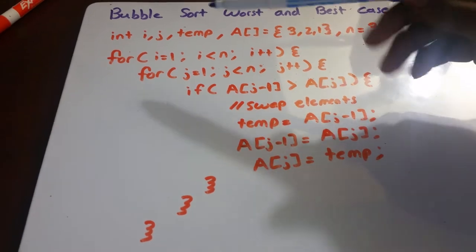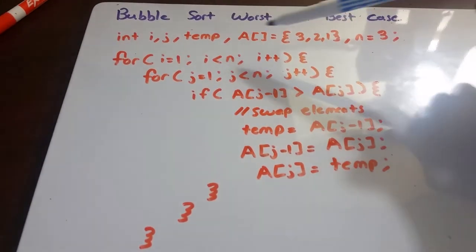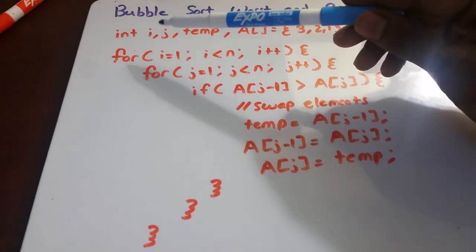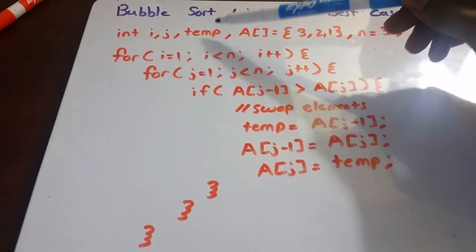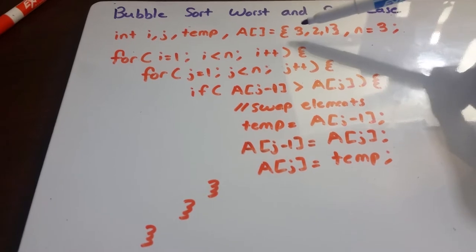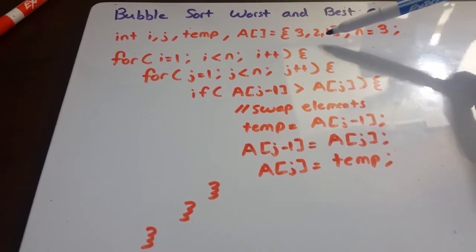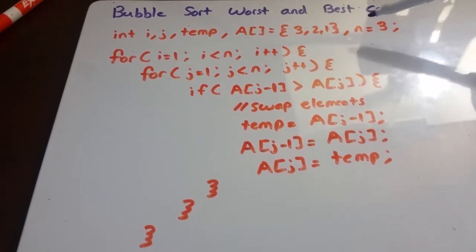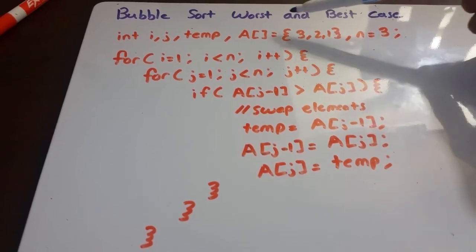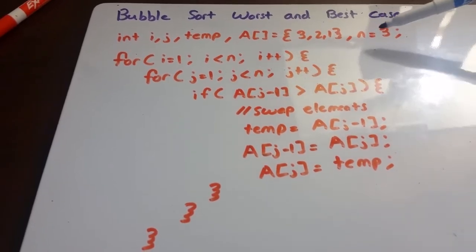Here in orange I have the bubble sort algorithm. It has five variables as integers: i, j, temp, and then we have our array a, which has three elements — three, two, and one — and n, which is equal to the size of our array, so n is equal to three.